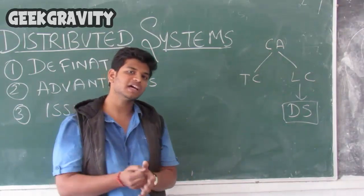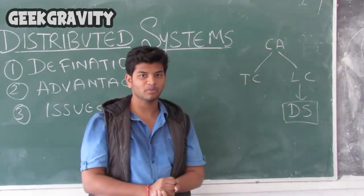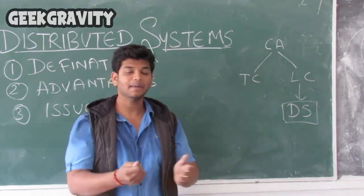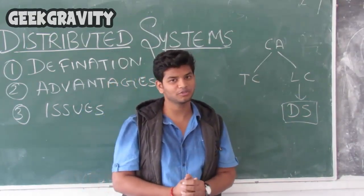Tightly coupled systems are those that share common memory. Loosely coupled systems are those that do not share common memory. And distributed systems are part of the loosely coupled category.